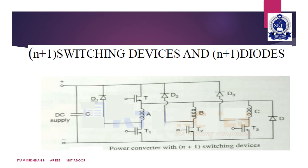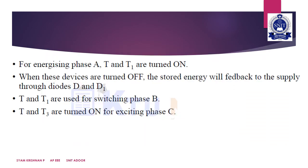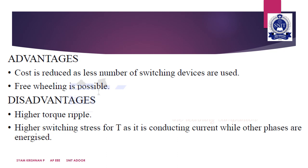Similarly, T and T2 are switched for energizing phase B, and T and T3 are turned on for exciting phase C. The advantages of this method are that cost is reduced and freewheeling is also possible. The disadvantages are high torque ripple and high switching stress for T.